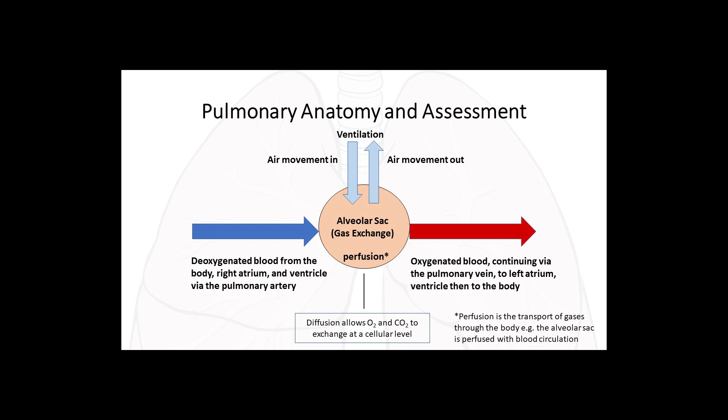Under normal circumstances, our lungs ventilate and perfuse to provide our body with oxygenated blood and to get rid of CO2. For ventilation, air moves in and out, and in the smallest portion of the lung — the alveolar sac — gas exchange occurs. Via the pulmonary artery, deoxygenated blood comes through the lungs and goes through small capillaries, allowing oxygen and CO2 to exchange at a cellular level. Oxygenated blood then continues via the pulmonary vein into the left atrium, left ventricle, and then the body. Perfusion is the transport of gases through the body, for example, the alveolar sac perfused with blood circulation.